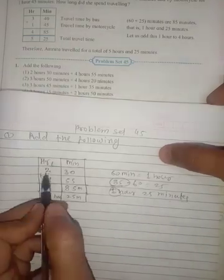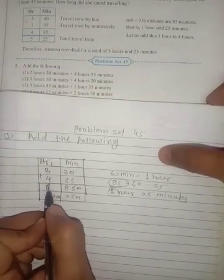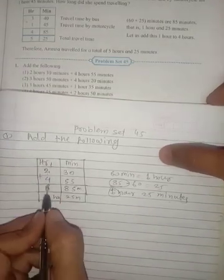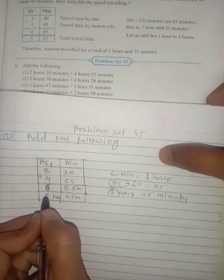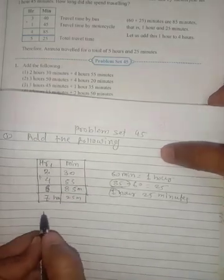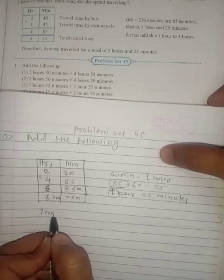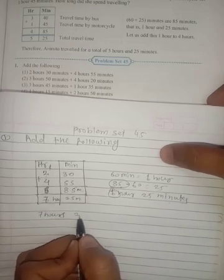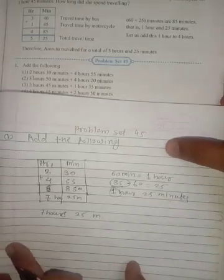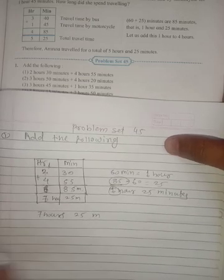It is 2 plus 4 is 6, and this one add to the other side, so it is 7 hours. So total time is 7 hours and 25 minutes. This is the addition.